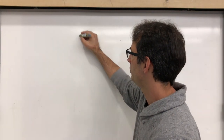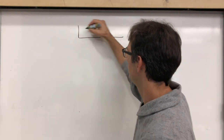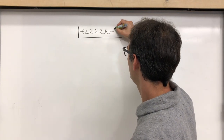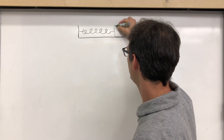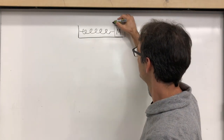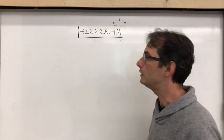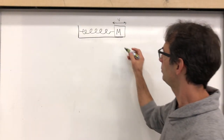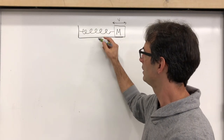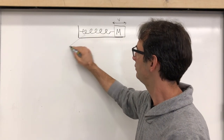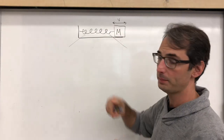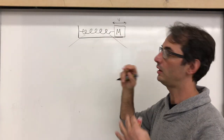Let me draw a quick picture of an idealized simple harmonic oscillator where a mass of value capital M is oscillating back and forth with an instantaneous speed v. There's no friction with the surface, but the spring itself is going to be contributing kinetic energy to the oscillating system because the spring itself has mass and velocity.